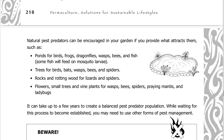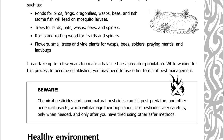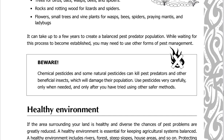Natural pest predators can be encouraged in your garden if you provide what attracts them, such as ponds for birds, frogs, dragonflies, wasps, bees, and fish — some fish will feed on mosquito larvae. Trees for birds, bats, wasps, bees, and spiders. Rocks and rotting wood for lizards and spiders. Flowers, small trees, and vine plants for wasps, bees, spiders, praying mantis, and ladybugs. It can take up to a few years to create a balanced pest predator population. While waiting for this process to become established, you may need to use other forms of pest management.